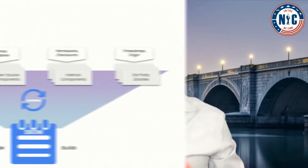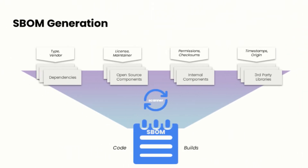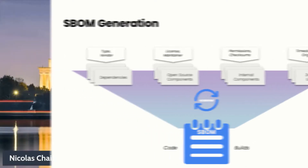So let's take a look at an S-BOM generation. You can see here we have dependencies, open source components, internal components, and third-party libraries. All these are combined and scanned to be able to find information about licenses, versions, but also about potential CVEs.